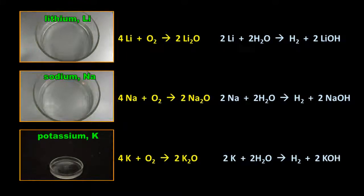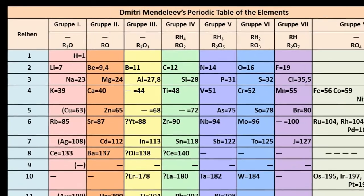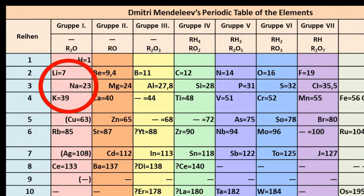So Mendeleev organized his periodic table to place these metals in a group. Here they are. Lithium, sodium and potassium. So how did he come up with the whole table? Let's have a look.